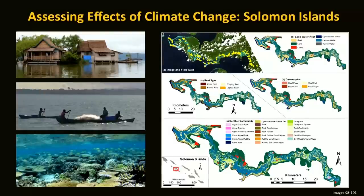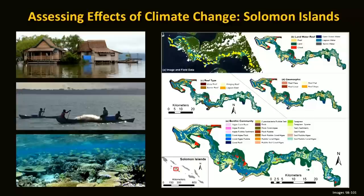Another project looked at assessing the effects of climate change in the Solomon Islands. Local villages are starting to be inundated and communities are concerned about where they should be living. They also notice changes in their environment and are getting less fish than they used to. The challenge was that there was generally no baseline, so this project created a good baseline of where the habitat was at all the different scales previously explained. As a result of these maps, there is a better understanding of what is where and which areas need to be protected when considering climate change impacts.